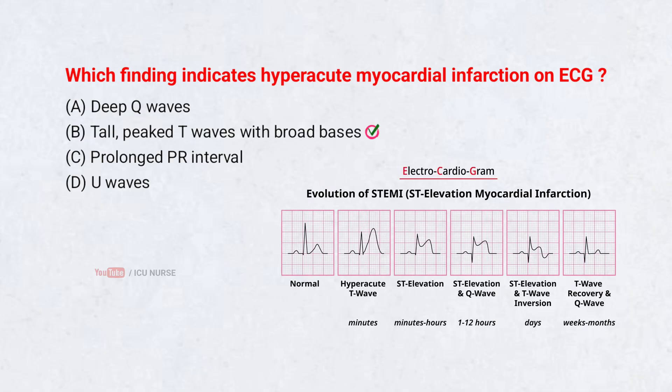Hyperacute MI typically presents with tall, broad-based T-waves in the early phase, before ST elevation develops. These T-wave changes reflect early injury to the myocardium.